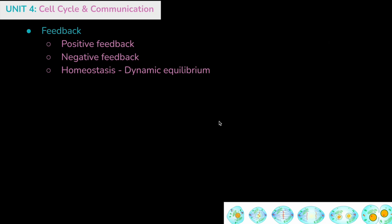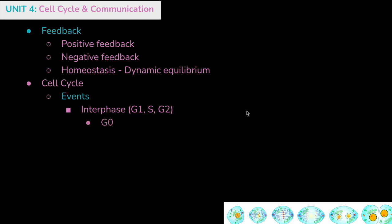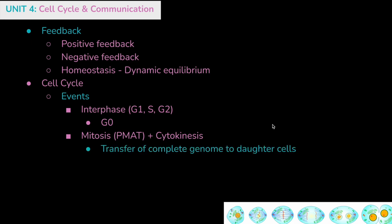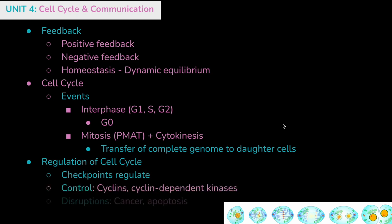Feedback is another important topic. Positive feedback loops amplify responses; negative feedback loops aim to return a system back to its set point and help maintain homeostasis within dynamic equilibrium. The cell cycle includes not only cell division but all phases leading up to it: interphase — G1, S, G2, and G0 — and then mitosis, which includes prophase, metaphase, anaphase, and telophase, followed by cytokinesis. The goal of mitosis is to transfer all of the genome to genetically identical daughter cells. The cell cycle is regulated through checkpoints including cyclins and cyclin-dependent kinases. Disruptions can lead to cancer or apoptosis.